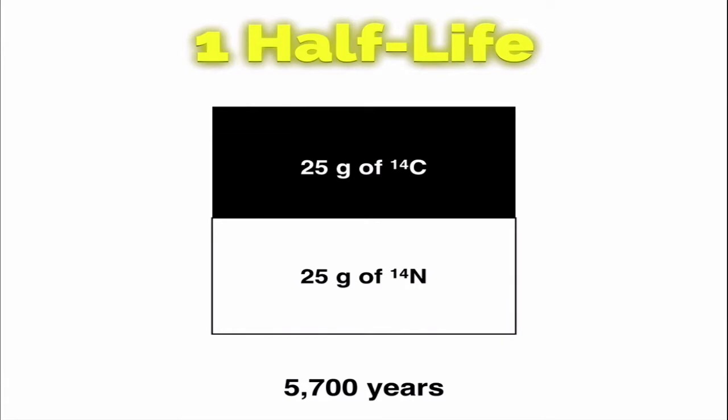After one half-life, half of the carbon-14 has broken down into nitrogen-14. So I have equal amounts: 25 grams of carbon-14 and 25 grams of nitrogen-14. I started with 50 grams of carbon-14 and 0 grams of nitrogen-14. So after one half-life I have half the amount of the carbon-14 I started with. It takes 5,700 years for one half-life of carbon-14 to take place. I didn't make that number up, it came from our reference table.